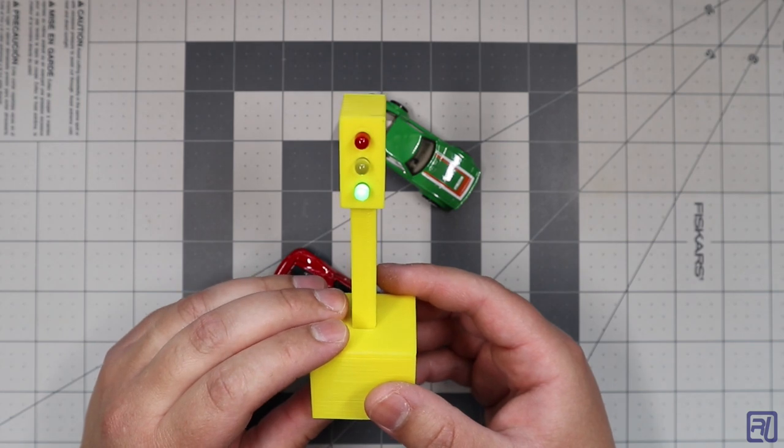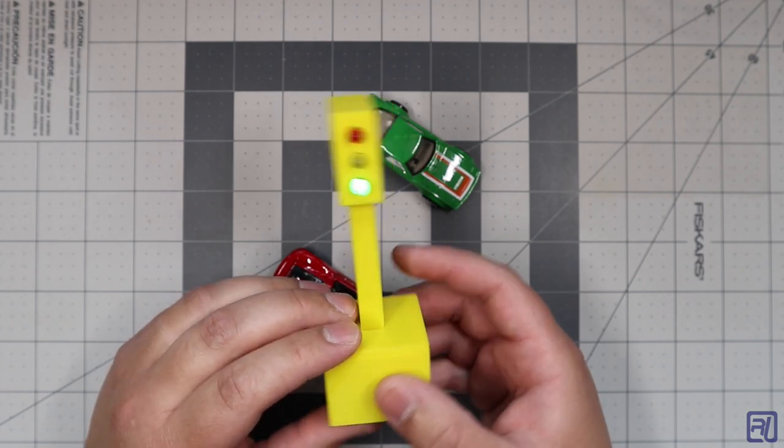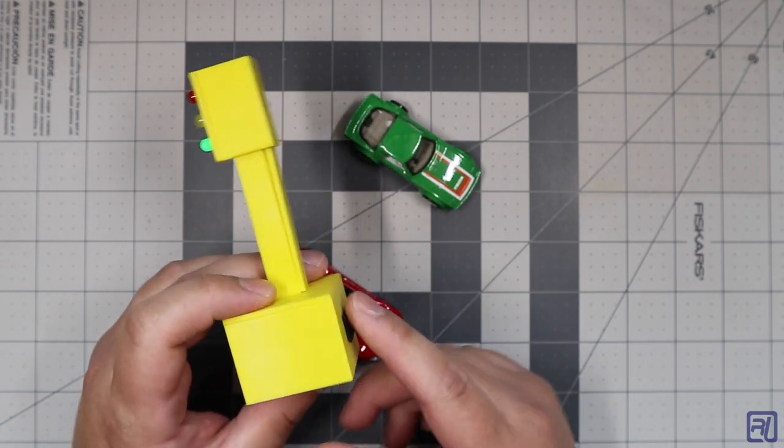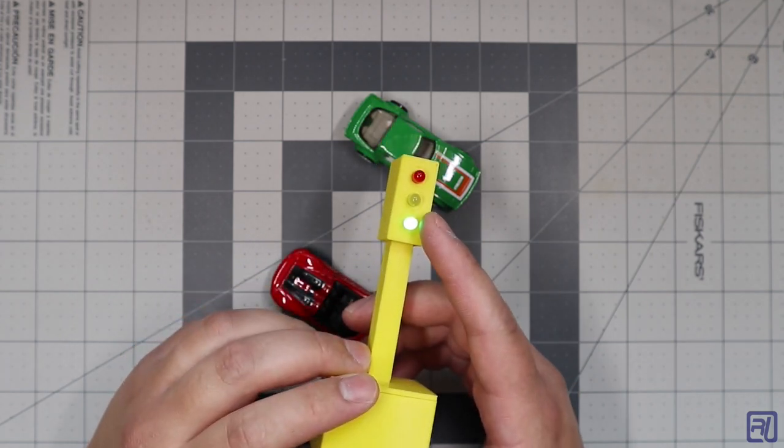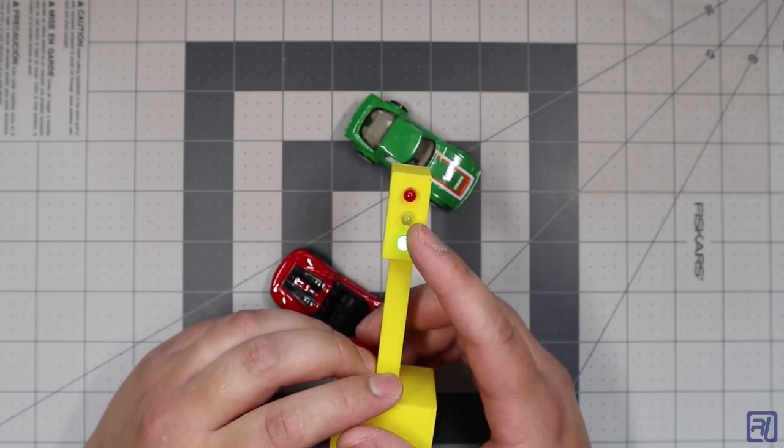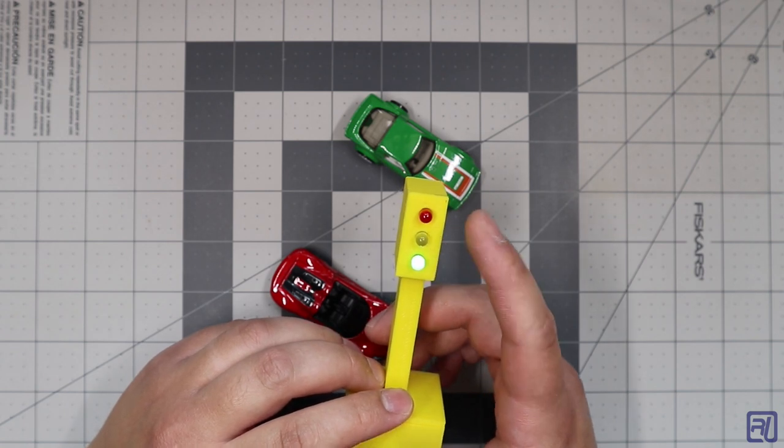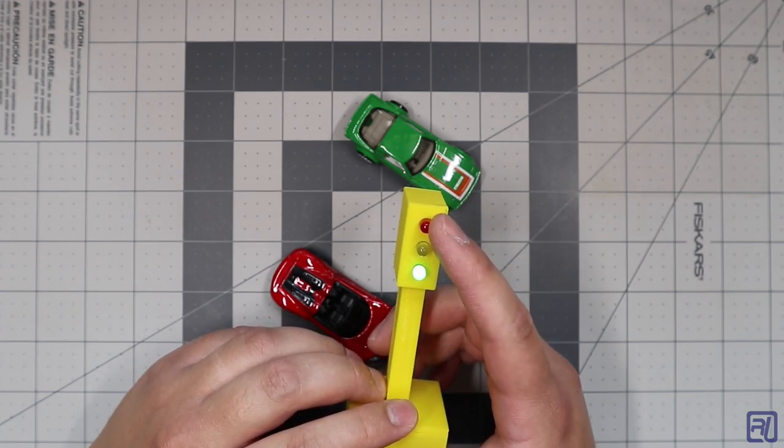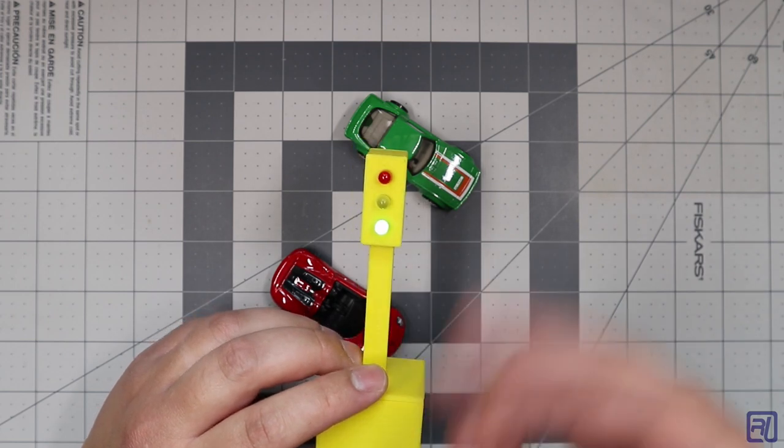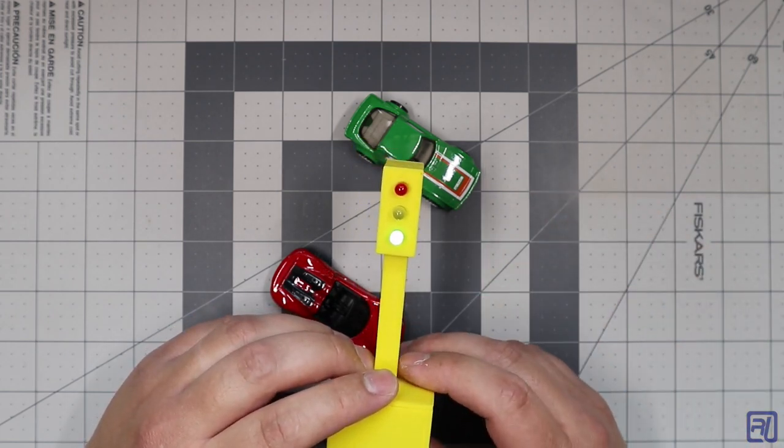I'll leave a link to the traffic light model in the video description. It's very simple to use, just flip the power switch and the LEDs will light up. The green LED turns on for 30 seconds, then the yellow LED turns on for 10 seconds, and finally the red LED will turn on for 15 seconds, and it'll just continue looping until you turn the power off.